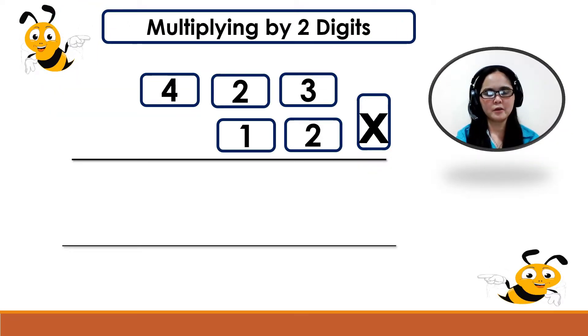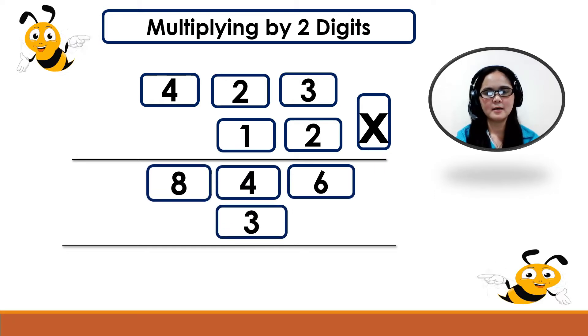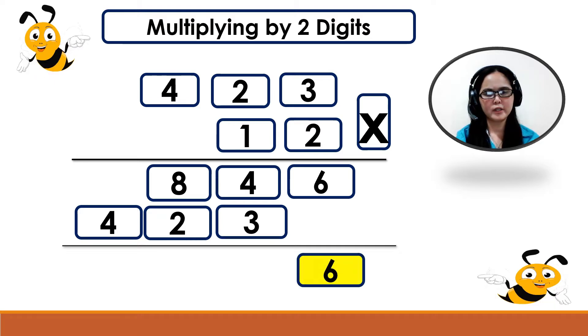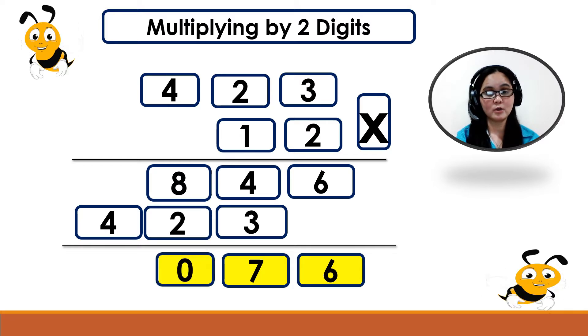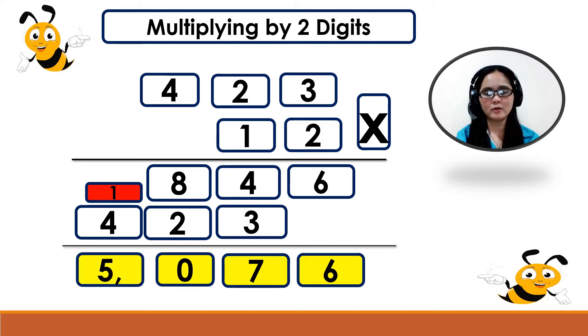Next, 423 times 1. 1 times 3 equals 3, 1 times 2 equals 2, 1 times 4 equals 4. Now, let's add. Bring down 6. 4 plus 3 equals 7. 8 plus 2 equals 10. Bring down 0. Carry 1. 1 plus 4 equals 5. So, 423 times 12 equals 5,076.